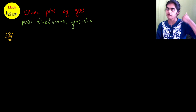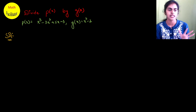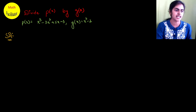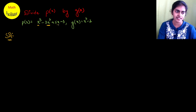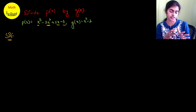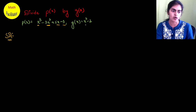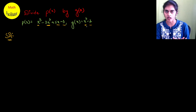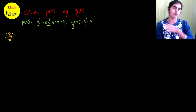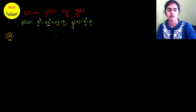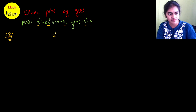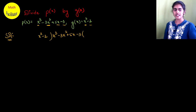Before you start the solution, there are two important steps you need to understand. First, you need to arrange your given polynomial in order of degree. Here x³ is the highest degree term, then x², then the constant — so this is already in order. Similarly, arrange G(x) in order too. This descending order is important. The bigger polynomial you are going to divide is called the dividend, and the smaller polynomial by which you divide is called the divisor.